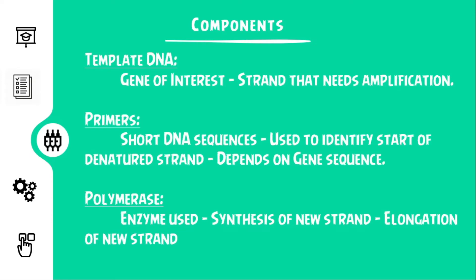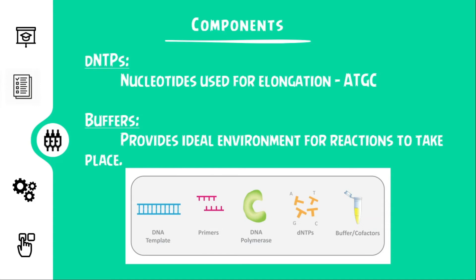The PCR process requires some components so as to amplify our gene of interest. It includes a template DNA or RNA molecule, which is nothing but our gene of interest. Primers are short strands of sequences used to identify the start of our denatured DNA strand. The enzyme used is usually a polymerase to aid in elongation of the new strand after primer binding. The common polymerase used is Taq polymerase, which is obtained from the bacterium Thermus aquaticus. dNTPs are the nucleotides used by Taq during elongation. The buffer is another important component which gives the ideal conditions for the process to work, and may or may not contain additional substances which aid in the proper PCR process.